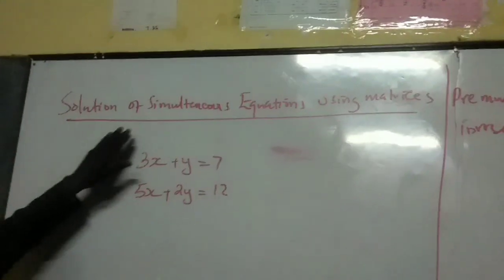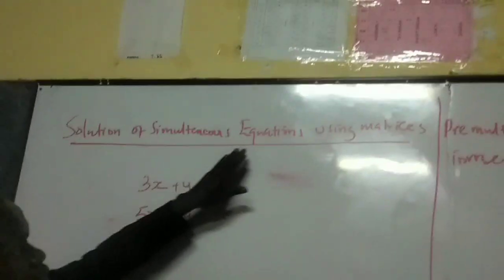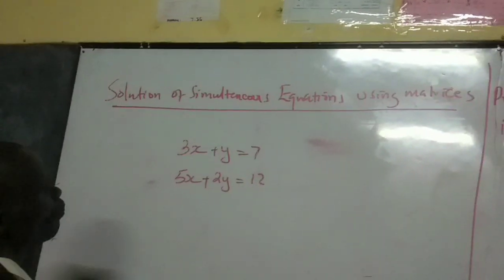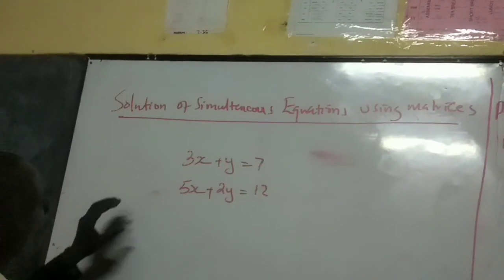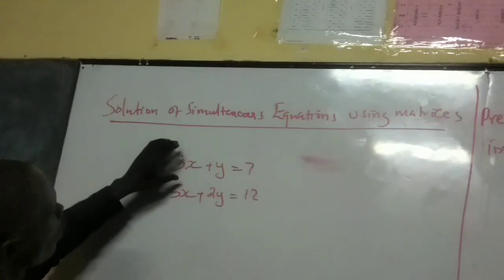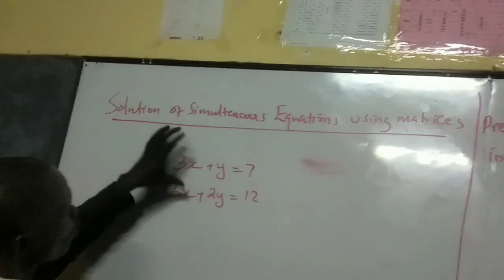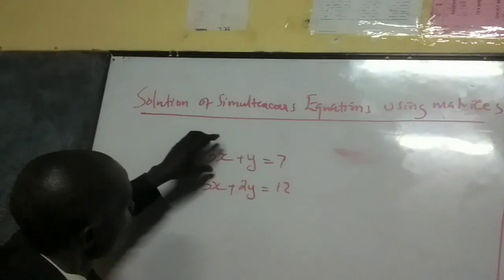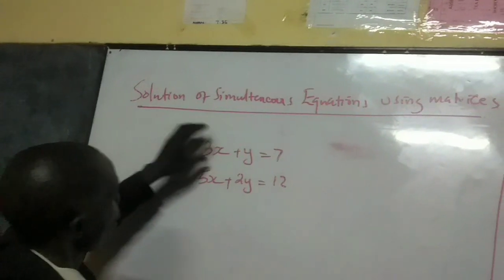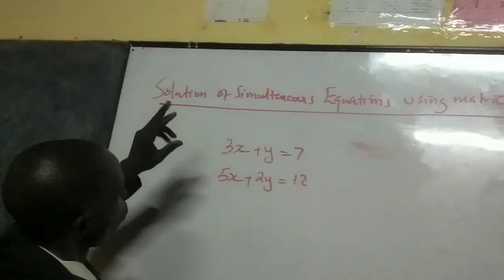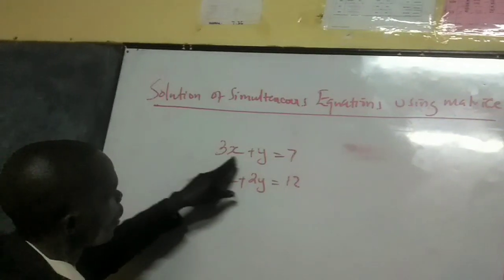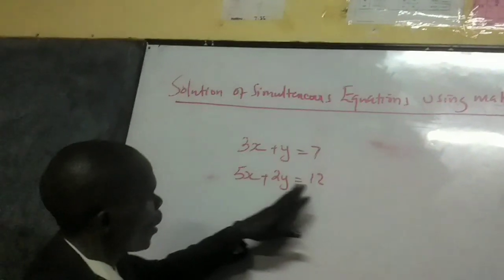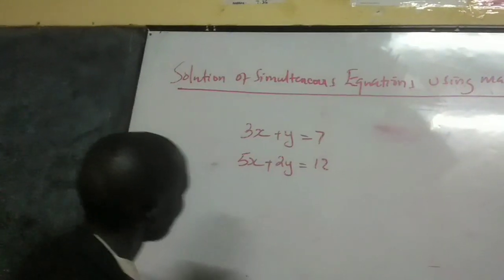Now, solution of simultaneous equations using matrices. How do we solve this? We're given a simultaneous equation here, where we have 3x plus y is equal to 7, and 5x plus 2y is equal to 12.